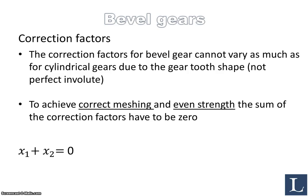When it comes to correction factors, the correction factors for bevel gears cannot vary as much as for cylindrical gears like spur gears, because the gear tooth shape does not have a perfect involute shape. To achieve correct meshing and even strength of the two teeth interacting during meshing, the sum of the correction factors in a bevel gear must be zero. So if you sum x1 and x2, you must get zero — one can be negative and the other positive, but you cannot have both positive.